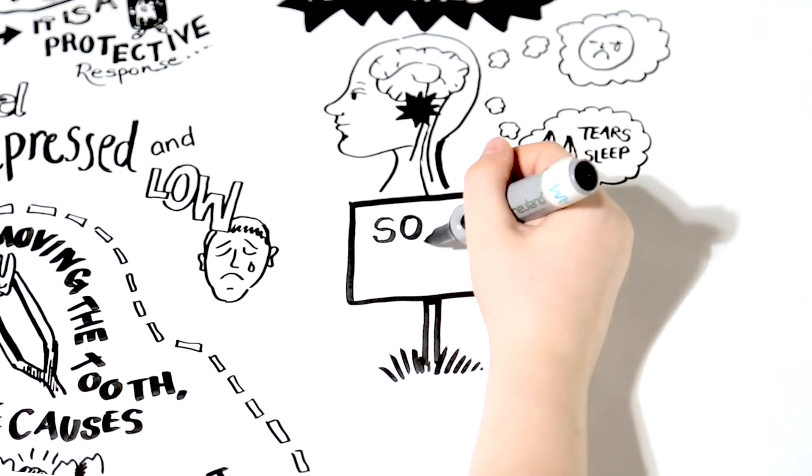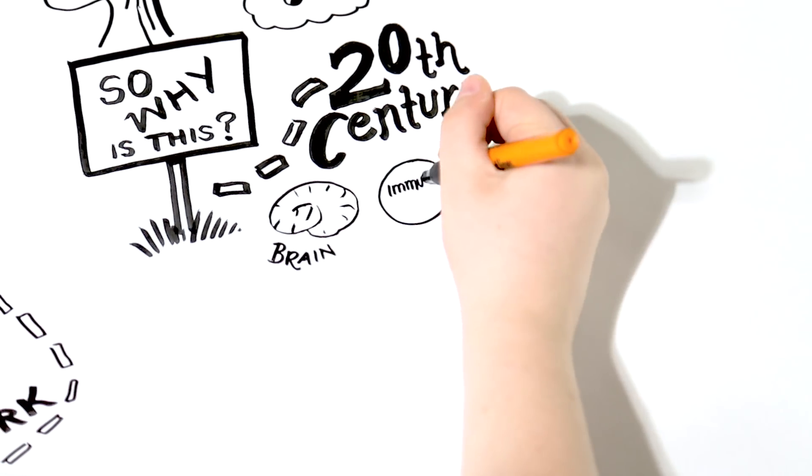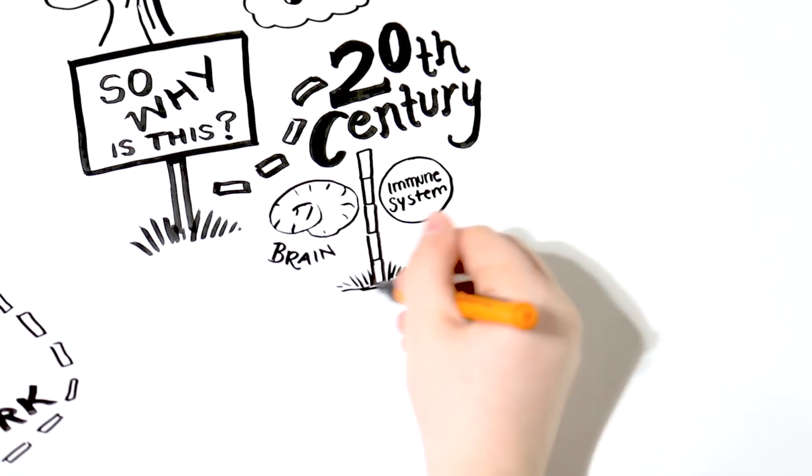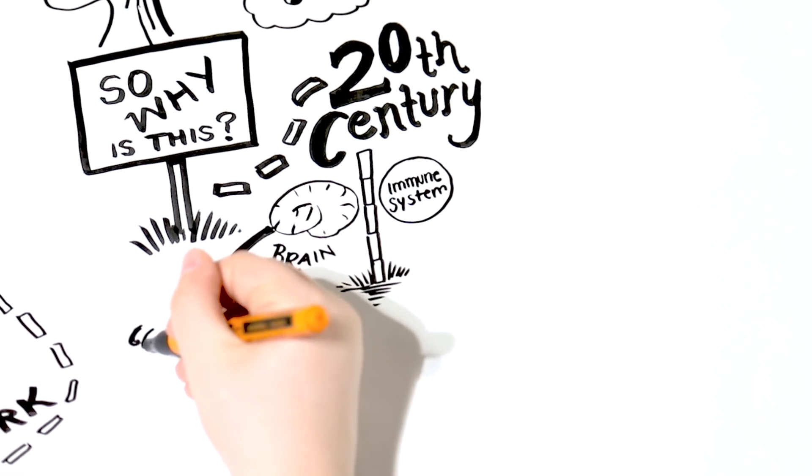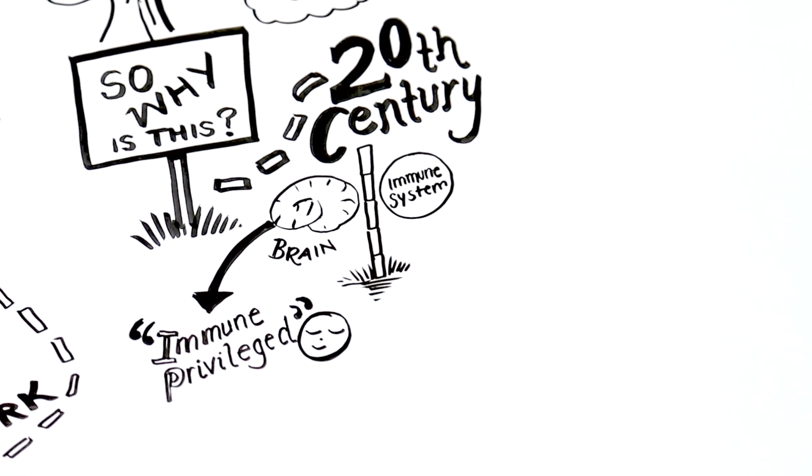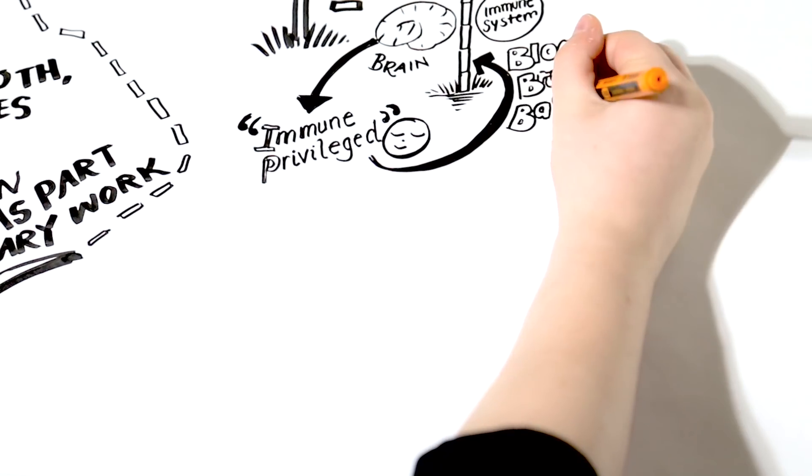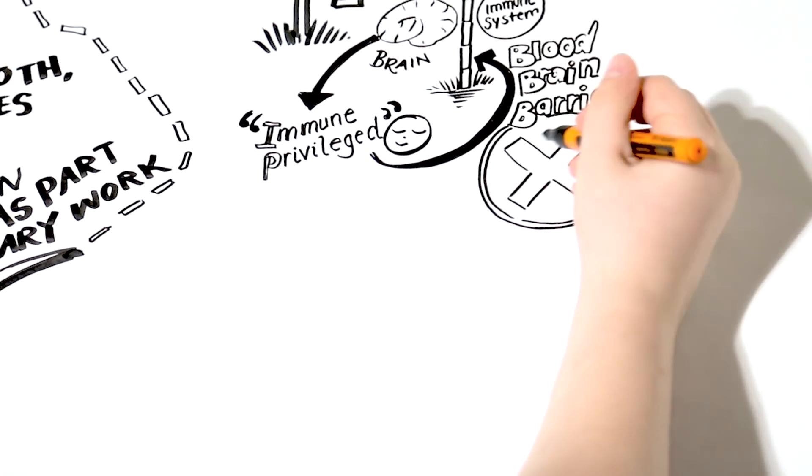So why is this new idea emerging now? In 20th century teaching, the brain and the immune system had nothing to do with each other. The brain was thought to be immune-privileged, meaning that nothing from the immune system could get through the blood-brain barrier that protected the brain and the mind from inflammation in the body.